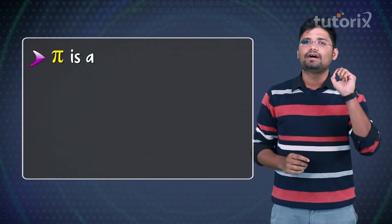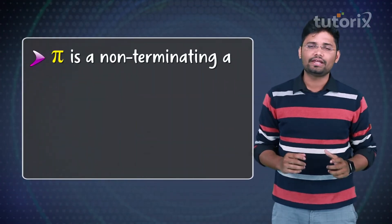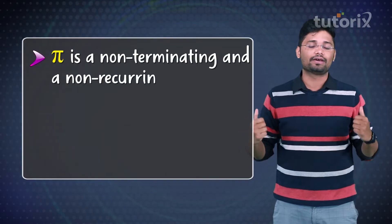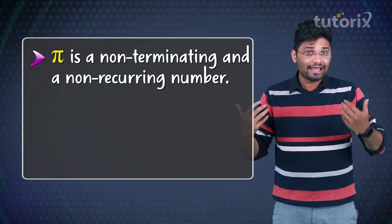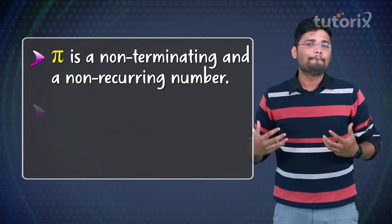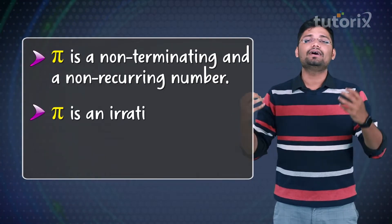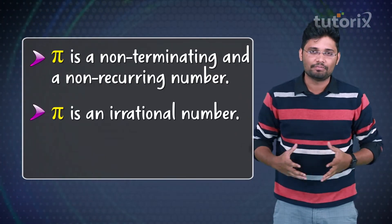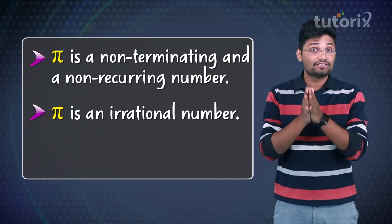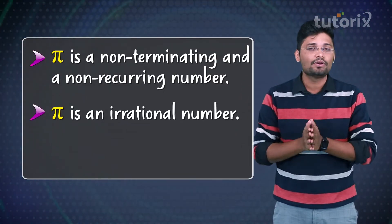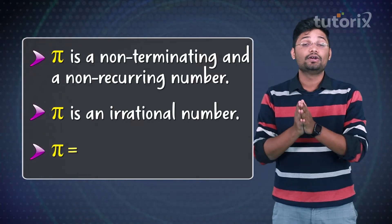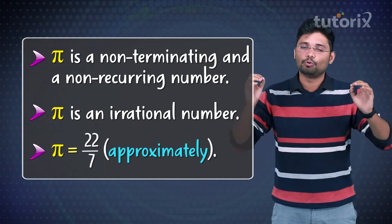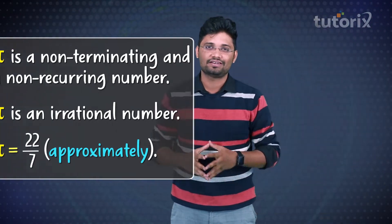Now Pi is a non-terminating and a non-recurring number. In other words, Pi is an irrational number. For ease of calculations, we approximate the value of Pi to be 22 by 7.